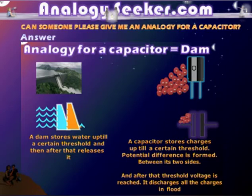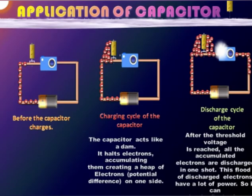On analogyseeker.com, you can ask a question and expect analogies and simple examples to explain it from others. For example, the analogy to explain the working of a capacitor is to compare its working to a dam. Just as a dam stores water up till a certain threshold and then after that releases it in a flood, a similar thing is done by capacitors. They store electricity, block them like a traffic police, and when they release them, they release it in one flash.